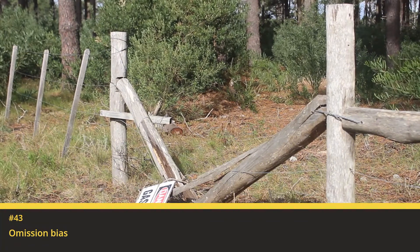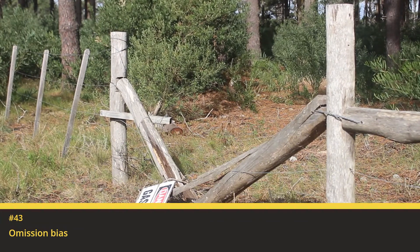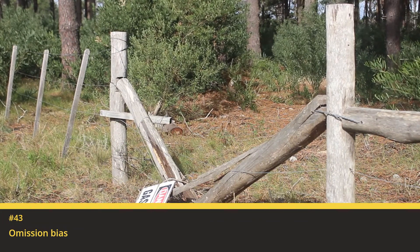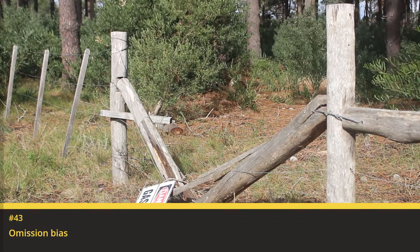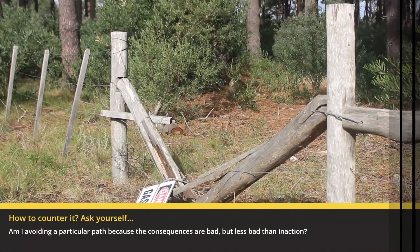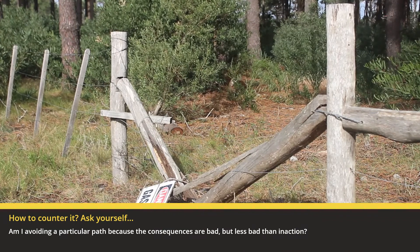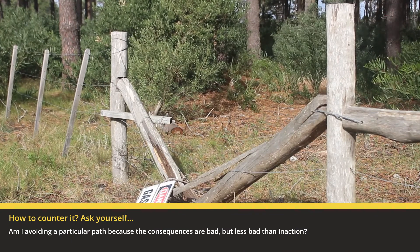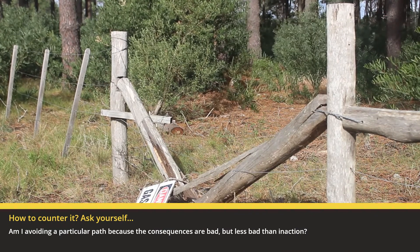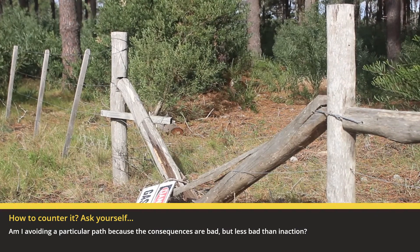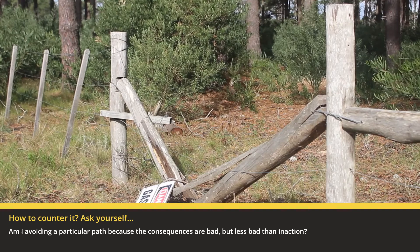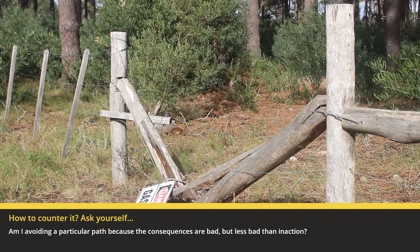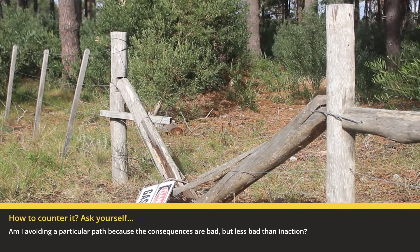43. Omission Bias: We tend to prefer inaction whenever both action and inaction lead to cruel consequences. How to avoid this bias? Ask yourself: am I avoiding a particular path because the consequences are bad, but less bad than inaction?